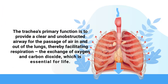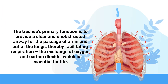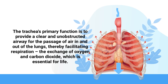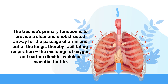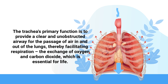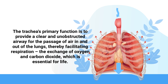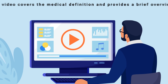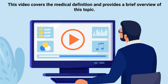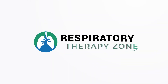The trachea's primary function is to provide a clear and unobstructed airway for the passage of air in and out of the lungs, thereby facilitating respiration — the exchange of oxygen and carbon dioxide — which is essential for life. This video covers the medical definition and provides a brief overview of this topic. So if you're ready, let's get into it.